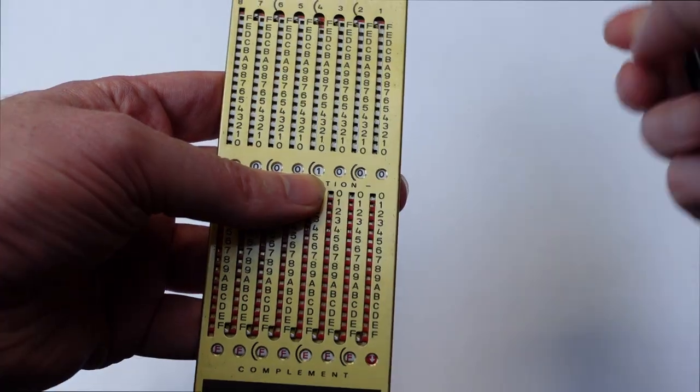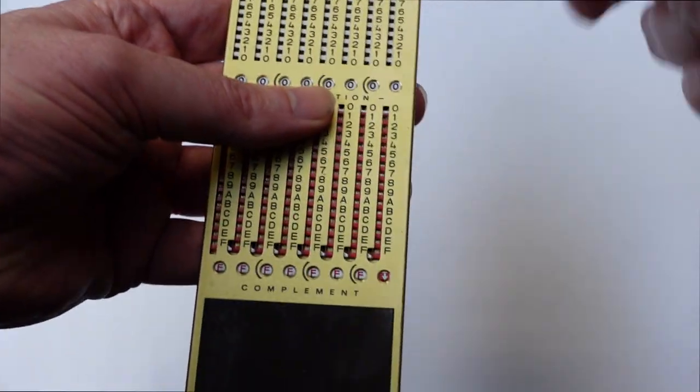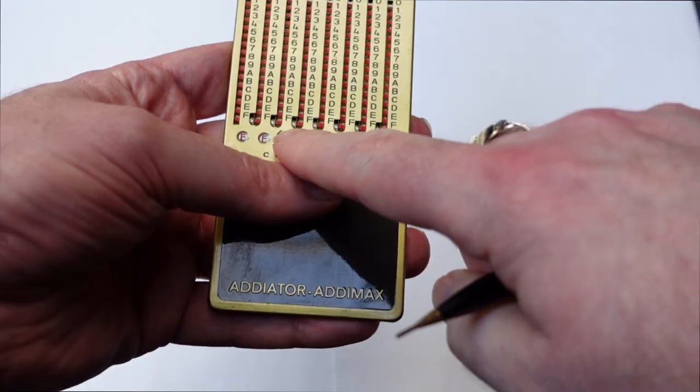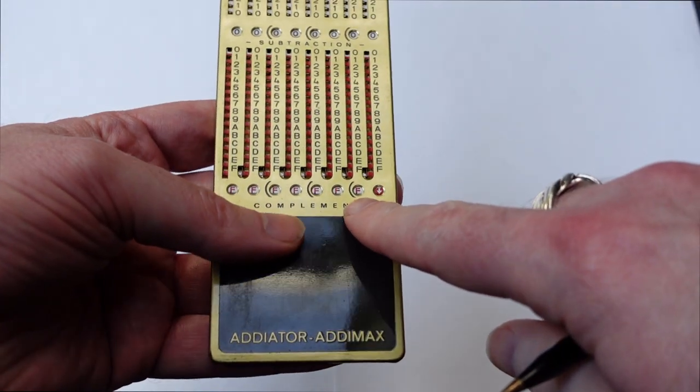There we go. So adding 7 to FF9 gives 1000.